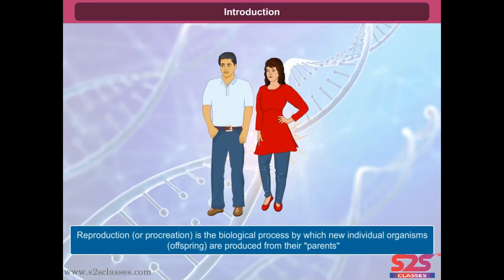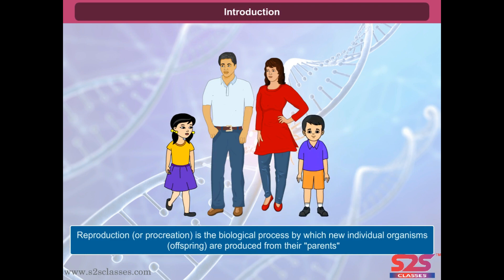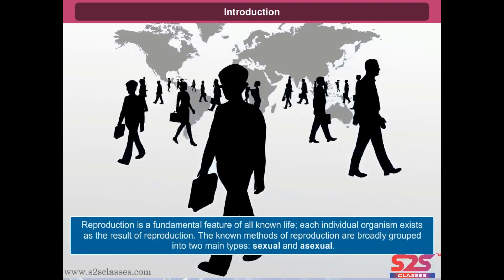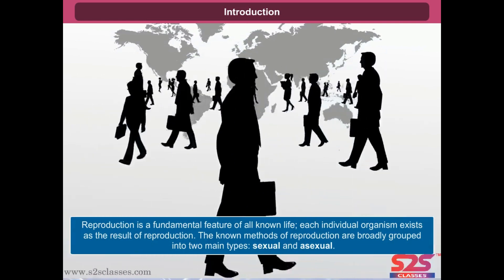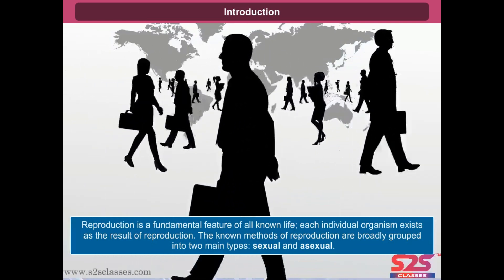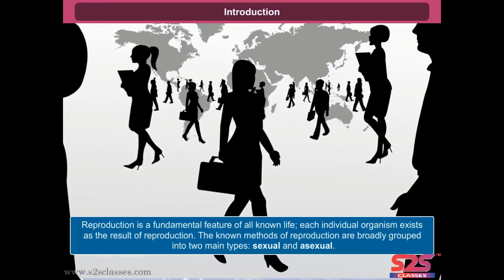Reproduction or procreation is the biological process by which new individual organisms or offspring are produced from their parents. Reproduction is a fundamental feature of all known life. Each individual organism exists as the result of reproduction. The known methods of reproduction are broadly grouped into two main types, sexual and asexual.